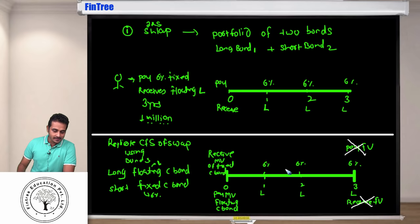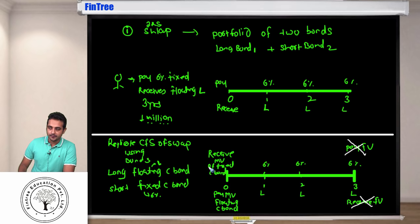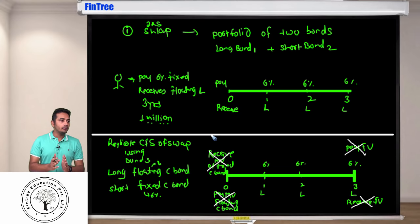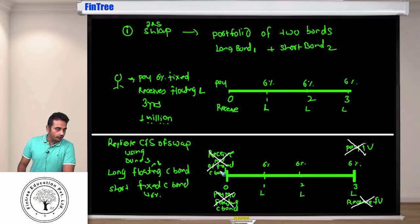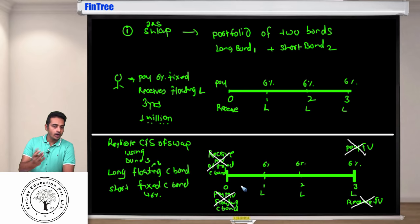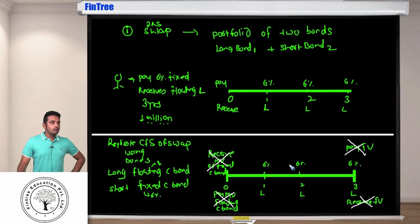The cash flows of the two structures are exactly the same, and there is no initial cash flow required at inception in the swap. If there is a differential in market value, it opens up an arbitrage opportunity. Therefore the market values must be exactly the same. The market value need not equal face value — it could be anything — but the two market values must match. If not, any party can enter the swap and the bond portfolio on opposite sides and earn an arbitrage.